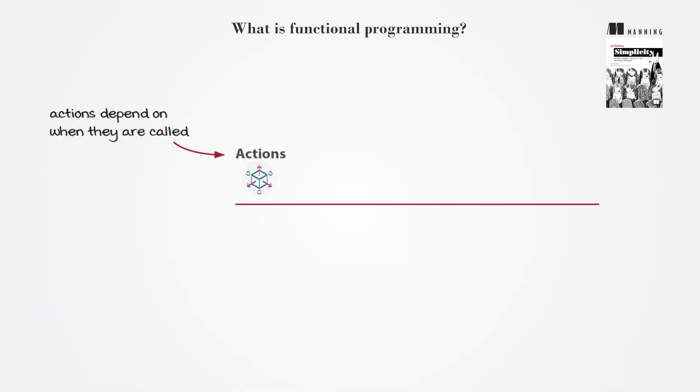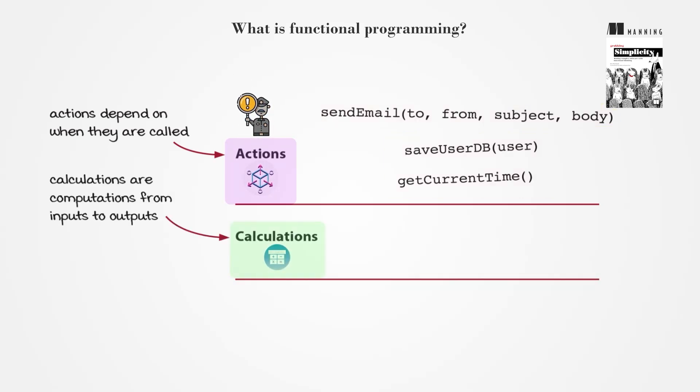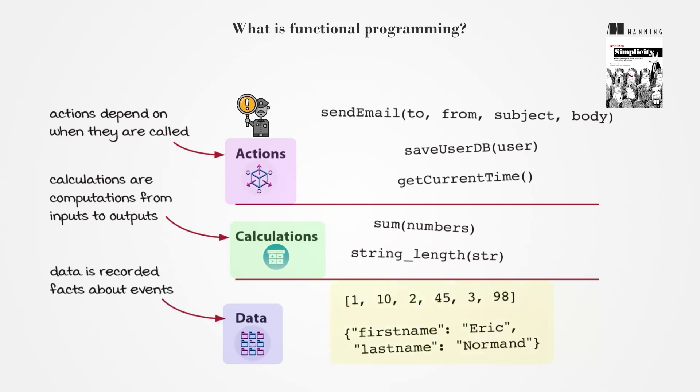Actions are any code that depends on when or how many times they are called, such as reading or writing a global mutable variable or sending an email. They require caution. Calculations consistently produce the same output for the same input, making them easy to test and use. Data doesn't execute but offers multiple interpretations.